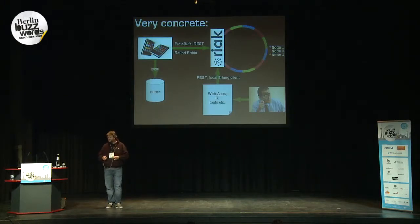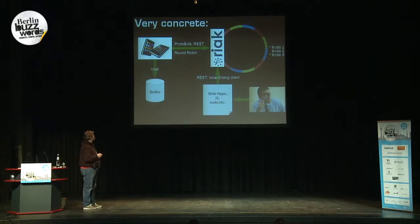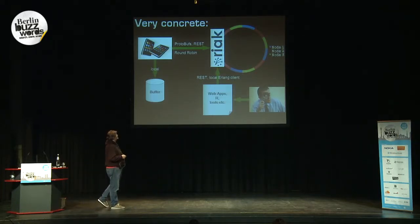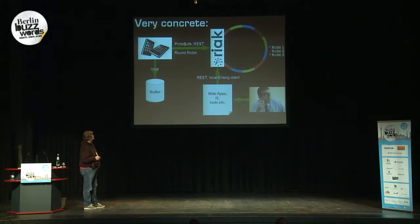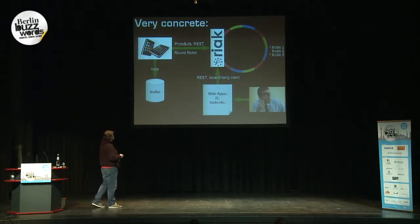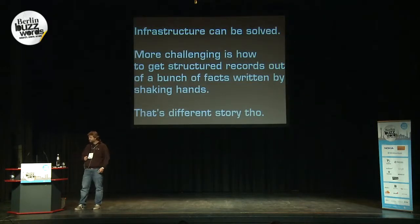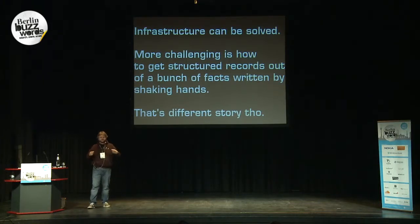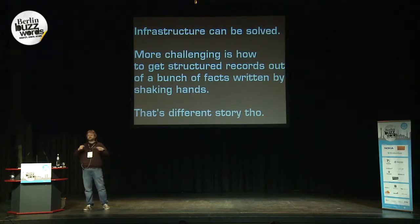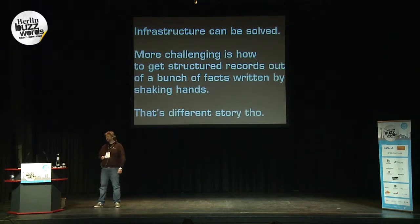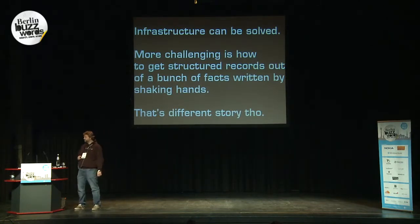More concretely, it works like this: you have a client application using protobufs or RESTful, whatever. It round-robins to different Riak entry points, different nodes. I have this ring — I'll go through it right now. I can buffer some data if I have no connection on my mobile device and batch it later to the Riak store. Analytics is done using R and similar tools, speaking natively with the Riak store. The most challenging thing is understanding the incoming facts and making a standardized form of them — but that's not the point of this talk.